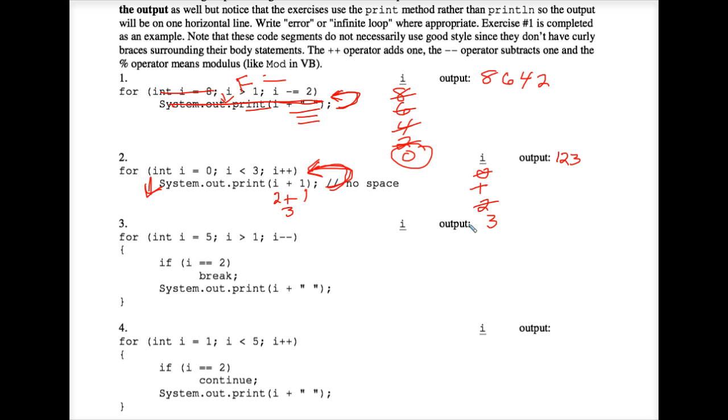We loop back up to the top. We I plus plus to 3. 3 is not less than 3, so that is false, and we are finished with this exercise. The output looks like the number 123, even though it printed those digits separately. The final value of I is 3. Let's do exercise 3.